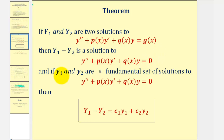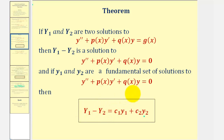From this, if little y sub one and little y sub two are a fundamental set of solutions to the homogeneous differential equation — which we know has a general solution in the form shown on the right — then the difference of big Y sub one and big Y sub two must be equal to the general solution to the homogeneous differential equation. Let's go ahead and prove that this difference is a solution to the homogeneous differential equation in this form here.